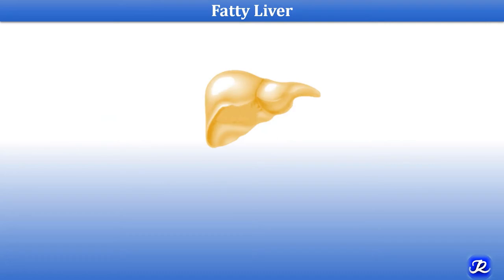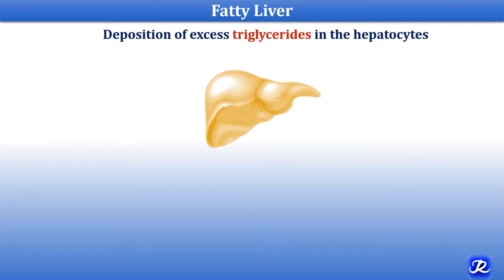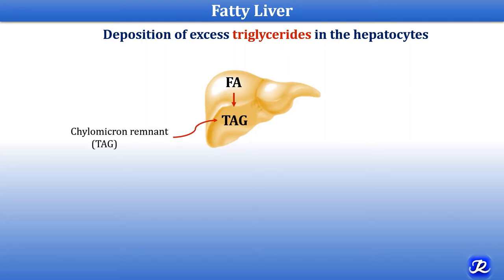What is fatty liver? It is the deposition of excess triglyceride in the hepatocytes. Fatty acid synthesis occurs in the liver in the well-fed condition, and these fatty acids are packaged as triacylglycerol — lipogenesis also occurs in the liver. This triacylglycerol can also be derived from chylomicron remnants.